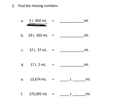...that each liter — one liter — is equal to a thousand milliliters. That's one of the key relationships we want students to know just off the top of their head. So that means five liters would be five thousand milliliters.